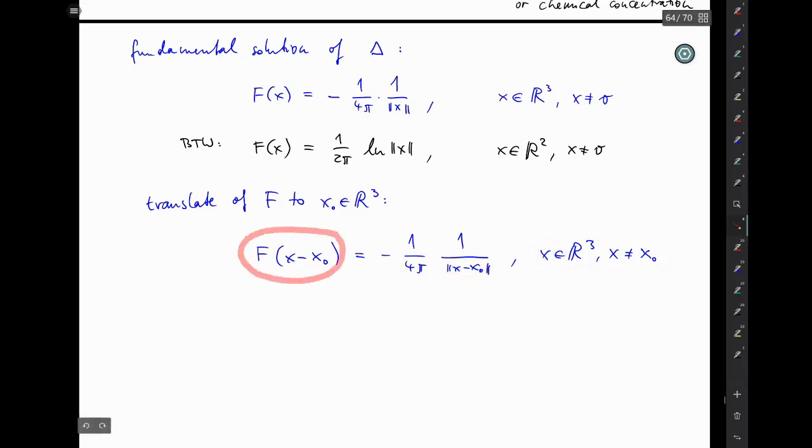This function is often written as a function of x and x₀, let's call that function little k. And now like I said you can take a superposition of multiples of translates of f.